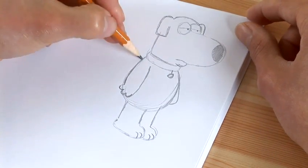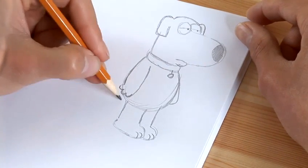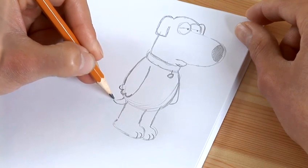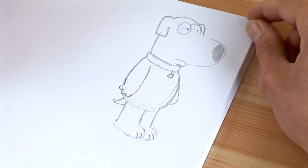And the only thing missing now is his tail. Of which all you need to do is just do a little like that. And that is Brian from Family Guy.